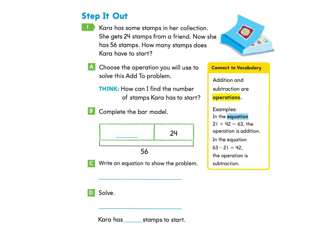We will start under Step It Out. Kara has some stamps in her collection. She gets 24 stamps from a friend. Now she has 56 stamps. How many stamps does Kara have to start?